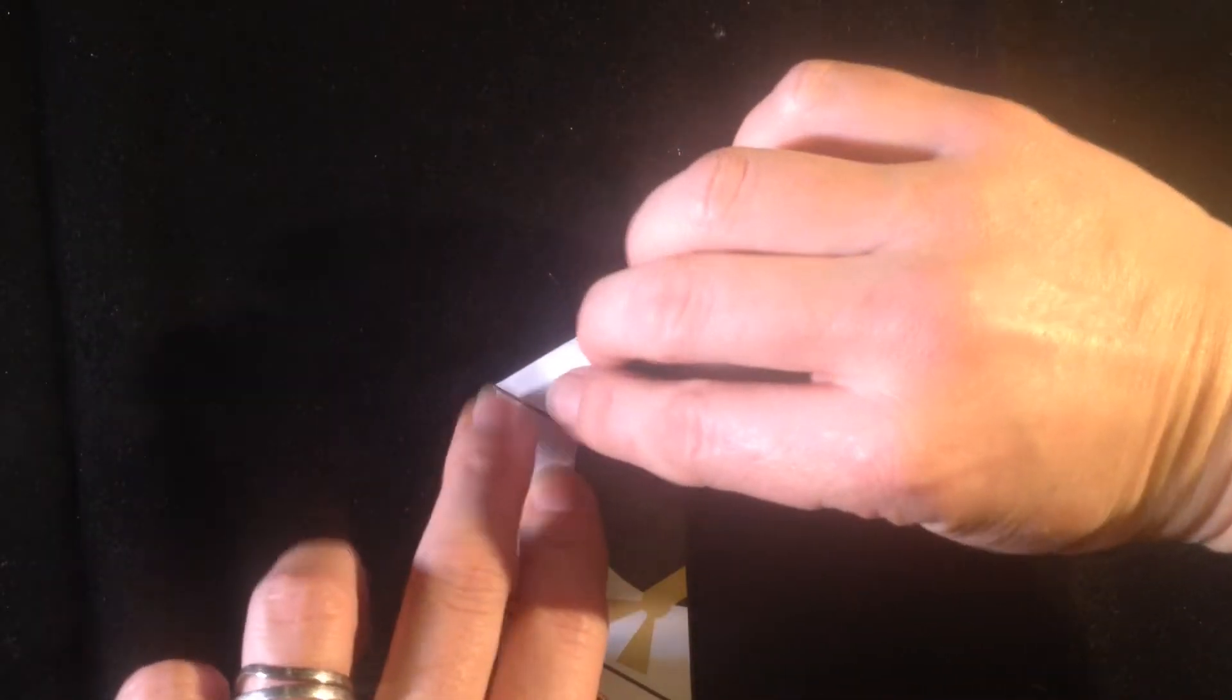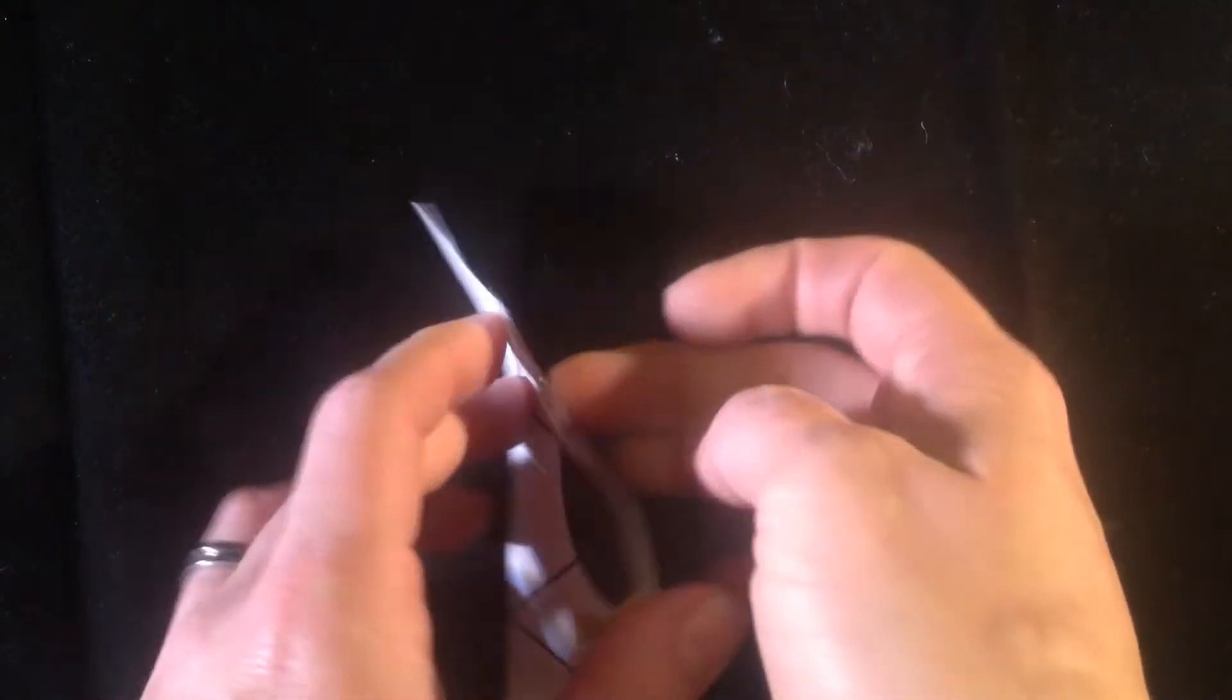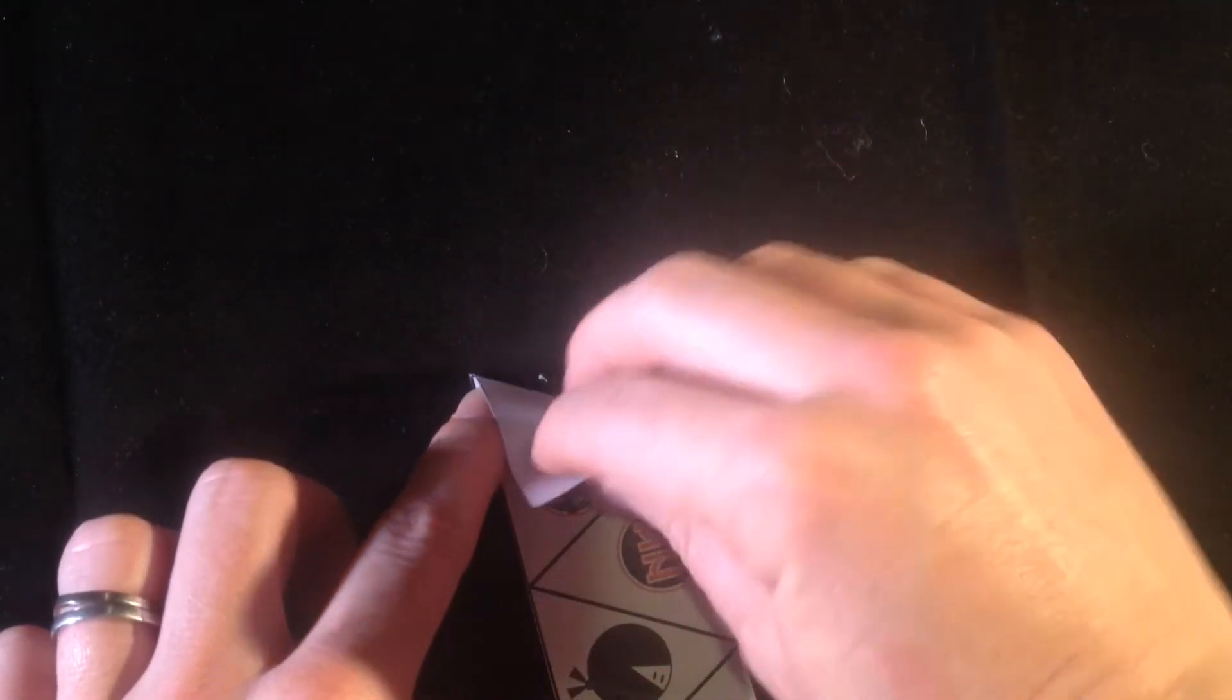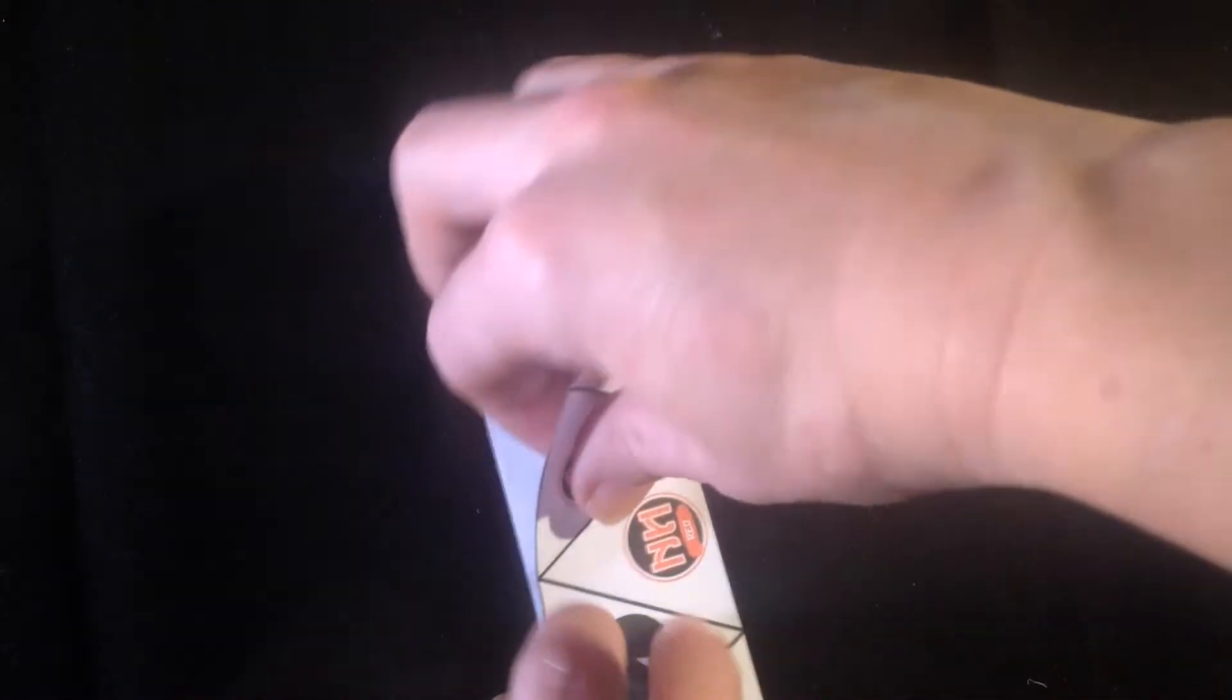Next you need to fold each of the triangles. Fold it over one way, then turn it over and fold it the other way. Do this along the length of your flexagon.